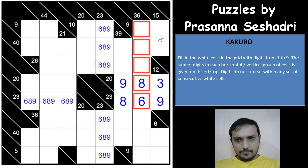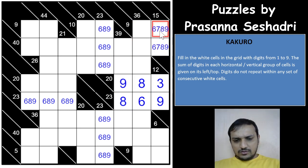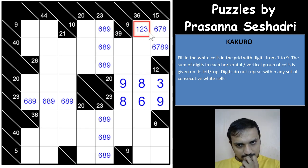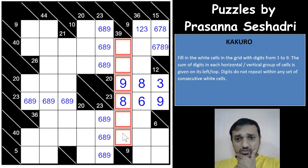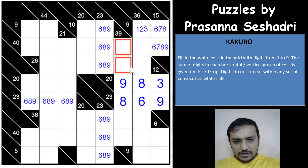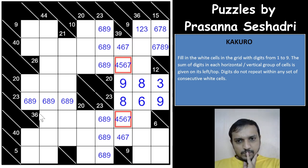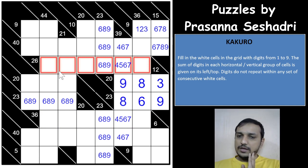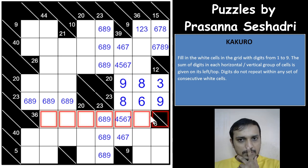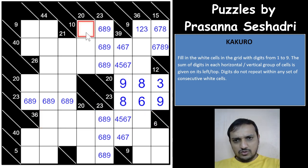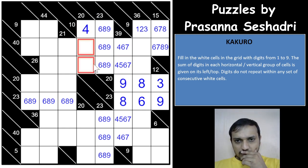These cells are now 6, 7, 8, and 9. This cell cannot have a 9 because of the 9-sum — it's either 1, 2, or 3. For the 39-sum with 6 cells, it must be exactly 9, 8, 7, 6, 5, and 4. These cells cannot be 5, and for the 20-sum with three cells, since 6, 8, and 9 are here, 1 and 2 are not possible — so this must be a 4, giving 7 and 9 in some order.